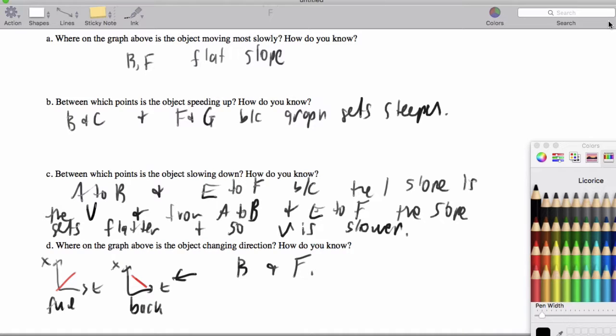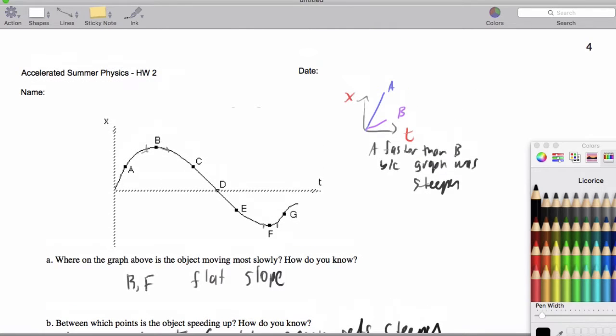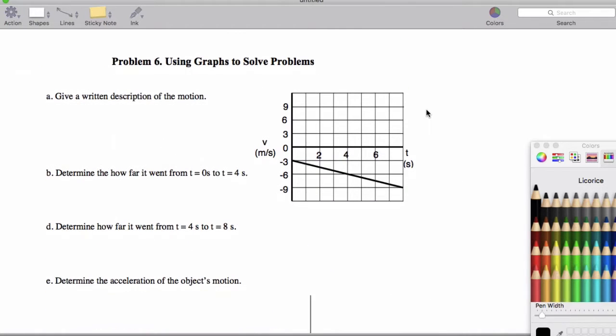All right, so that's page one. Page two, we want to give a written description of the motion. So what we're going to basically say here is that the object is moving backwards and gaining speed.